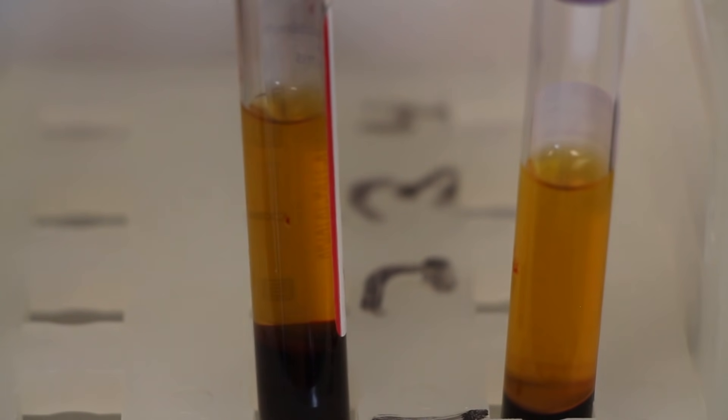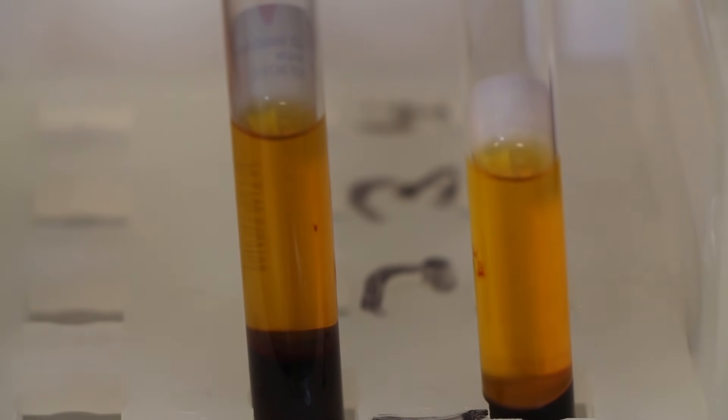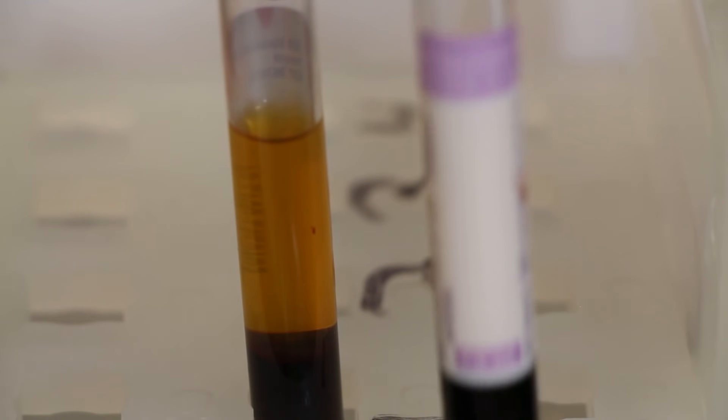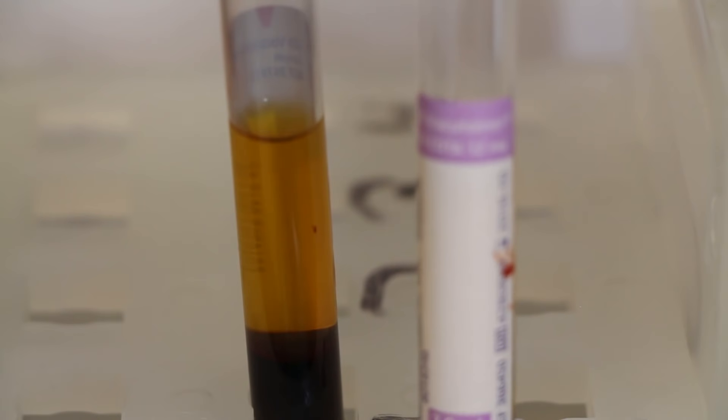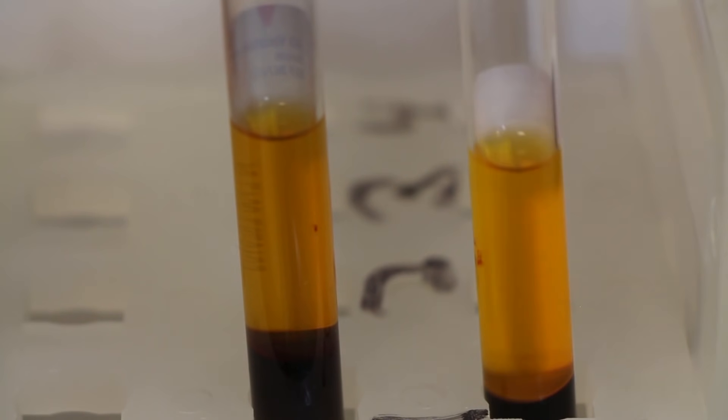The anticoagulant tubes are going to have plasma in them, so that liquid is going to still contain platelets. The coagulating tubes are going to have serum in them because all the platelets have coagulated and been spun to the closer to the cells in the bottom, the red blood cells at the bottom.